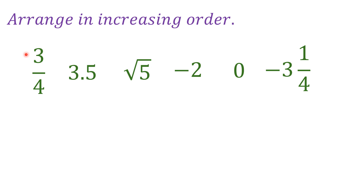The first number is a rational number. This one is also under rational numbers, which is in decimal form. These are irrational numbers — well, this one is an irrational number. This is an integer, a whole number, and another one is part of the rational numbers. Basically, these are rational numbers except for the one which is an irrational number.